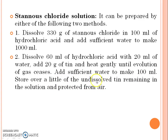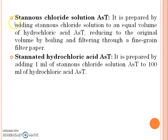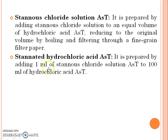Store over a little of the undissolved tin remaining in the solution and protect it from air. Stannous chloride solution is prepared by adding stannous chloride solution to an equal volume of hydrochloric acid, reducing to the original volume by boiling and filtering through a fine-grain filter paper. Stannated hydrochloric acid is prepared by adding 1 ml of stannous chloride solution to 100 ml of hydrochloric acid.